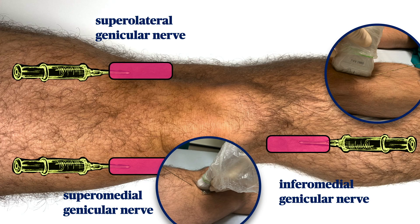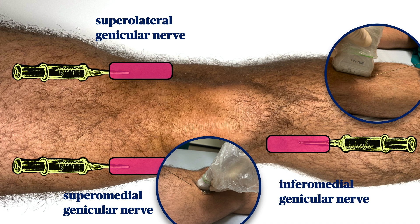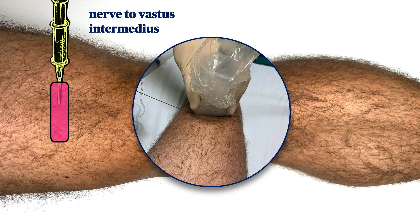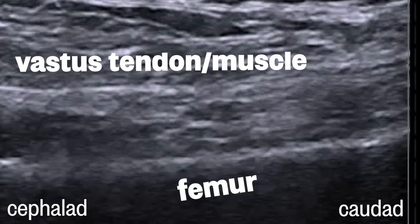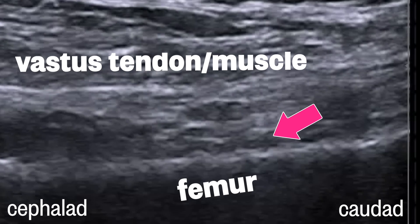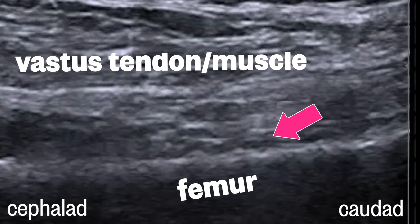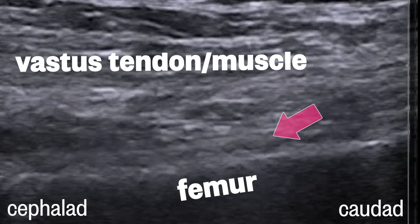Here are the probe positions for the three genicular nerve blocks. For the two superior nerves, the probe is angled at 45 degrees so that you're catching the anterior lateral and anterior medial femur, and in each case the needle is advanced toward the knee joint. For blocking the nerve to vastus intermedius, you're looking for the hyperechoic line of the femur as it flares up to become the epicondyle. A useful landmark is the small genicular artery that can often be seen right where the femur starts to slope up, although it's not always visible.